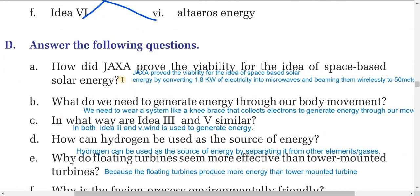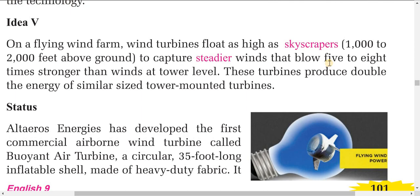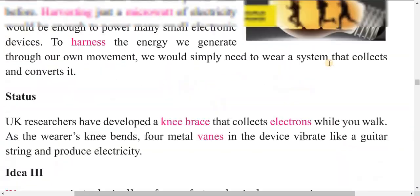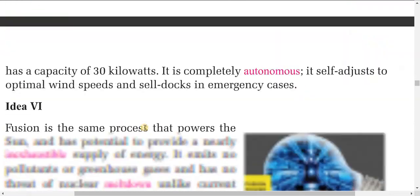Question a: How did JAXA prove the viability of the idea of space-based solar energy? JAXA — the Japan Aerospace Exploration Agency — proved the viability by successfully converting 1.8 kilowatts of electricity into microwaves, after which they wirelessly beamed them a distance of 50 meters, thereby proving the idea of viability for space-based solar energy.